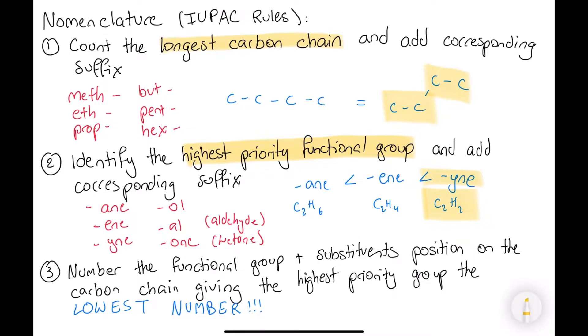The next thing you need to do is number the functional group and the substituents, which are the other groups on the chain that are not the highest priority. The most important thing is to give the highest priority group the lowest number on the chain.